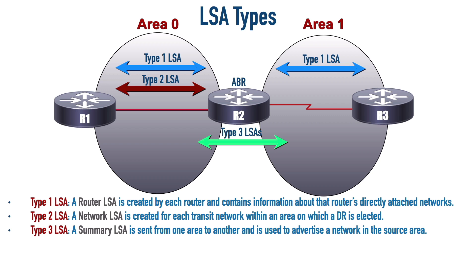Remember, within an area we know how every network and every router is interconnected. We're able to run the Dijkstra algorithm on this very detailed map with costs of all those links. But we might want to get to a network in another area. Do we need a map of that other area? No - that would defeat the point of having another area to break up the link state databases. So instead, the area border router sends summarized information. Instead of saying 'here's a map to Area 1,' R2 tells all the routers in Area 0 'here is a listing of networks in Area 1.' If you want to get to one of those networks, come to me and I'll forward you on. For every network in an area, there's a single Type 3 LSA sent into the other area to advertise that network.